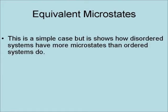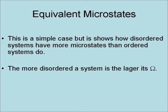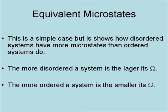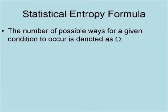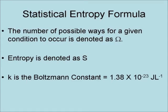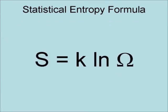This is a simple case, but it shows how disordered systems have more microstates than ordered systems do. The more disordered a system is, the larger its omega is, and the more ordered a system is, the smaller its omega is. The number of possible ways for a given condition to occur is denoted as omega. In this formula, entropy is denoted as S, and k is the Boltzmann constant. This results in the formula S equals k times the natural logarithm of omega.